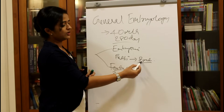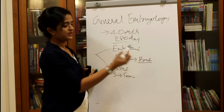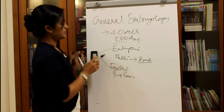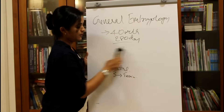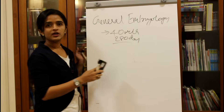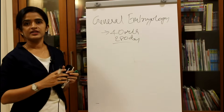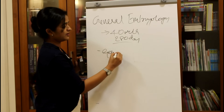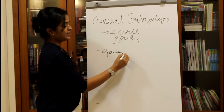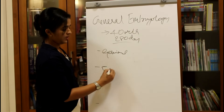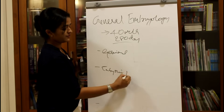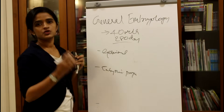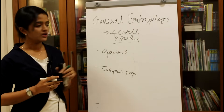The embryonic period occurs during the first 8 weeks of development. It is further classified as the germinal period and the embryonic period proper. These two periods together we call the embryonic period.